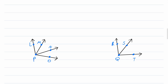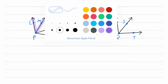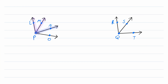Let's check out two more non-examples. Is angle LPM adjacent to angle NPO? They do share a common vertex of P, and they share no interior points. However, notice that they do not share any side. So these two angles are not adjacent.